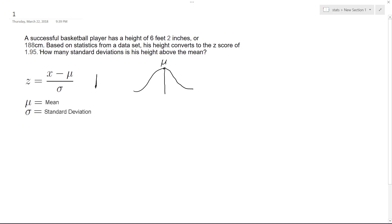In this case, it says he's 1.95 above. So simply put, that's just 1.95 for z, and actually your solution is 1.95.